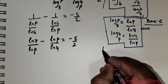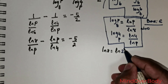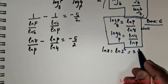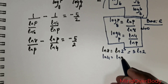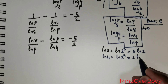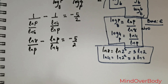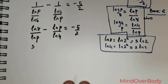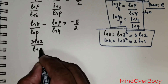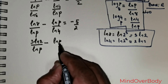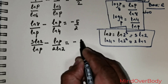Now I am going to rewrite ln(8) as ln(2³), which equals 3·ln(2) by the logarithmic power rule. Similarly, ln(4) can be rewritten as ln(2²), which equals 2·ln(2). Using these concepts, the expression becomes: 3·ln(2) over ln(p), minus ln(p) over 2·ln(2), equals negative 5 over 2.